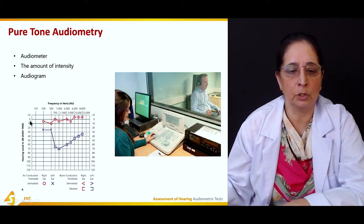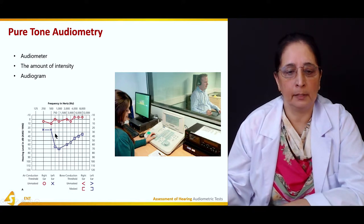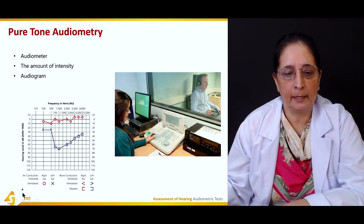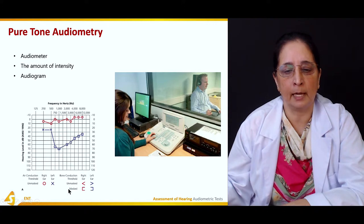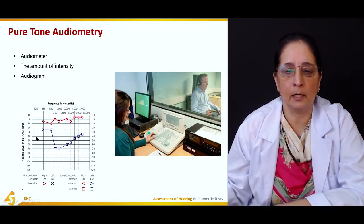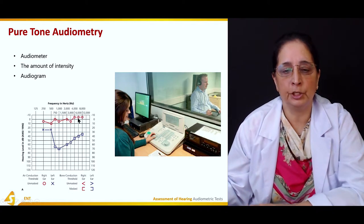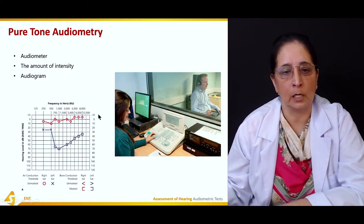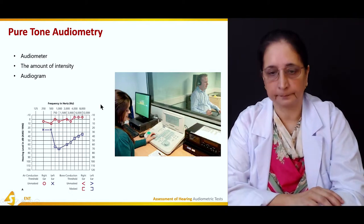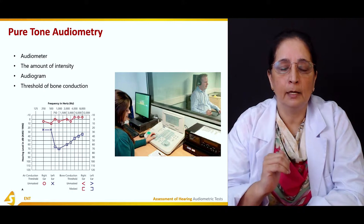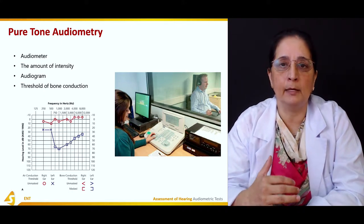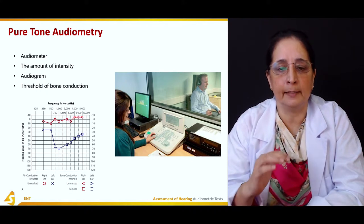The hearing level ranges from 0 to about 120 decibels. We also have air conduction and bone conduction, with separate symbols for the right ear for each. The threshold is the level at which the patient usually starts hearing.